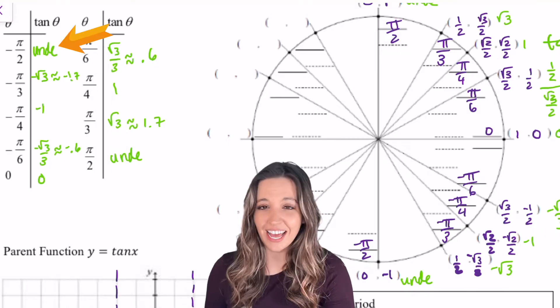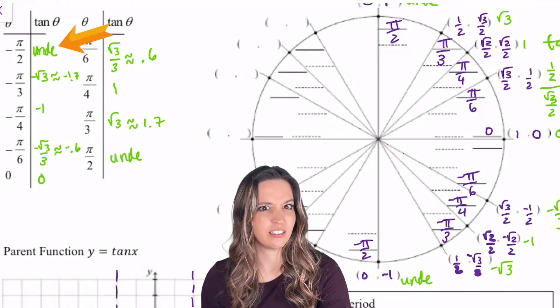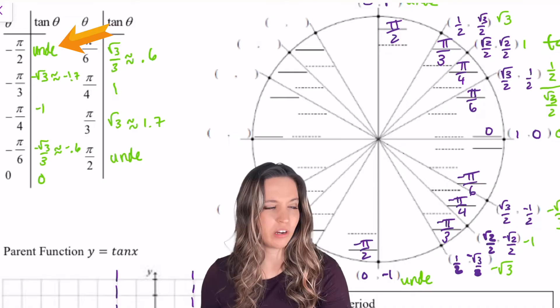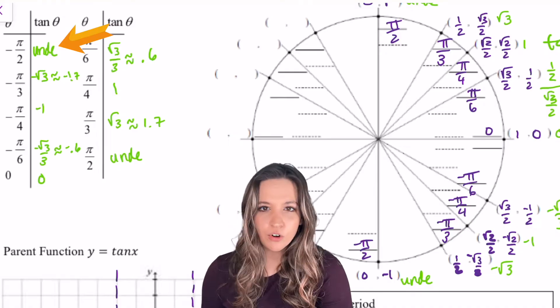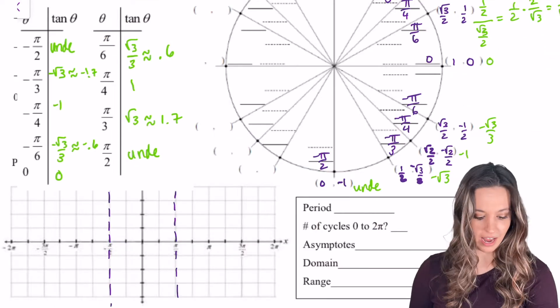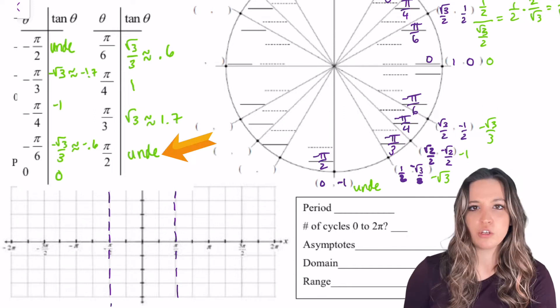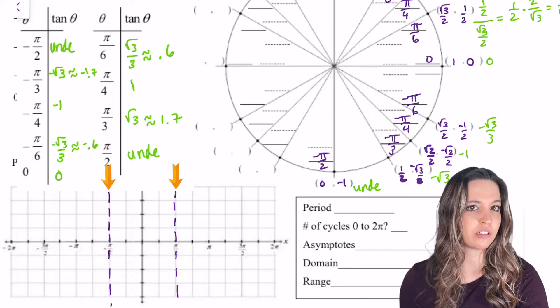Now that we have our table of values, let's graph. At negative pi halves, I'm undefined. What does that mean? 1 divided by 0 — that's a vertical asymptote. I'm also going to have one at positive pi halves. So I'm going to plot the vertical asymptotes first.